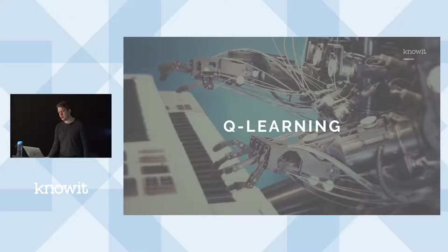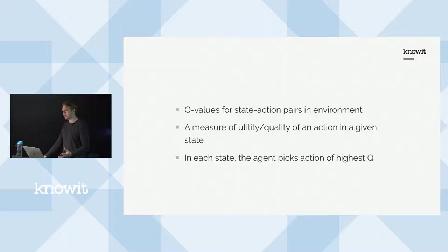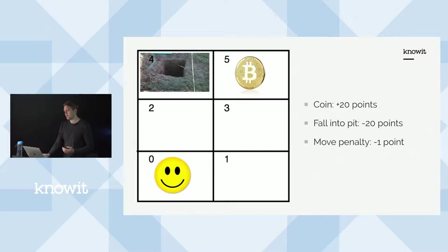Q-learning is an algorithm that learns how good an action is in a given state — this value is called the Q value. For each state-action pair, there will be a score of how good those actions are. When the model is trained, these Q values measure how good each action is in each game state. When you run the algorithm, the agent simply picks the action with the highest Q value for each state — that's the exploitation step.